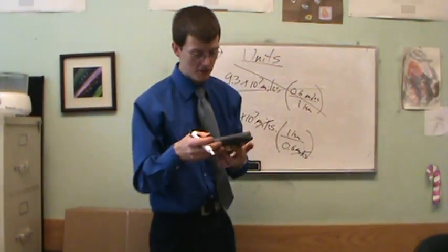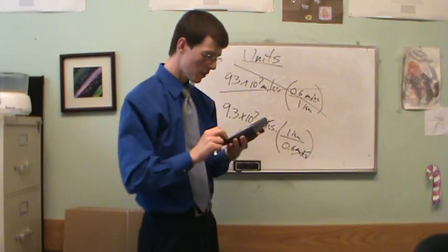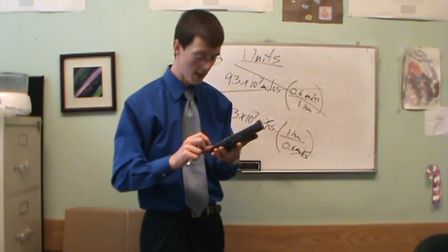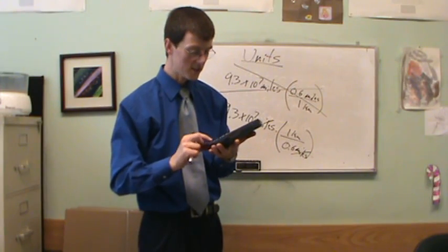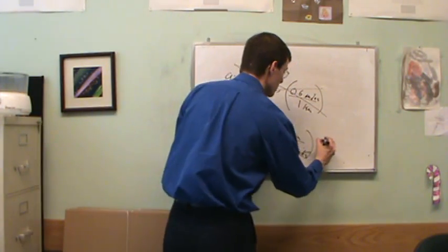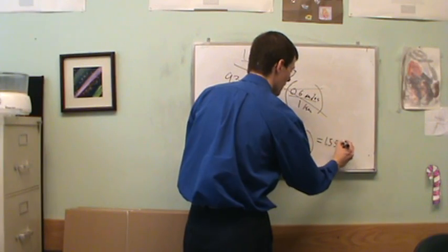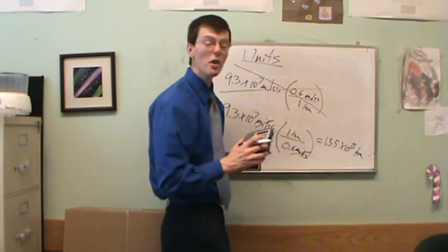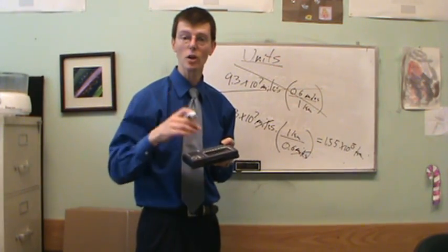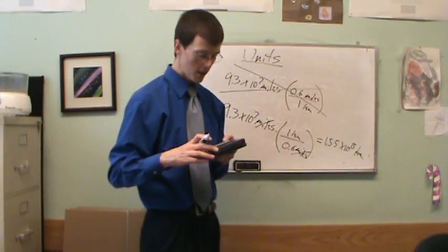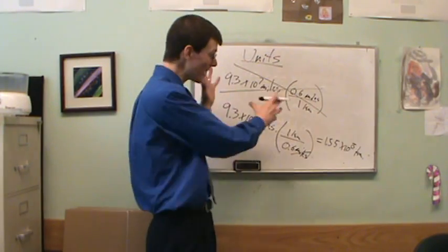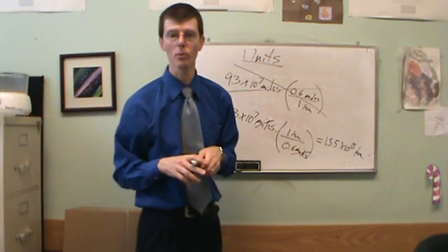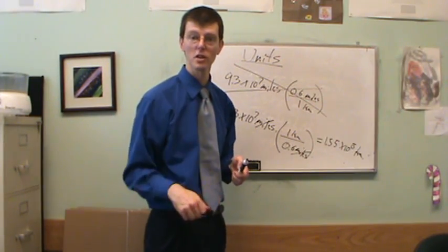Let me grab my calculator and see if we can actually get a specific number on this one. We have 9.3 times 10 to the seven miles divided by 0.6. And I know that my result is going to be 1.55 times 10 to the eight kilometers, 155 million kilometers. That's the distance between the earth and the sun. So there we go. This is how we do unit conversion. If you write it out in both ways, you'll never make the mistake of dividing when you should multiply or multiplying when you should divide.